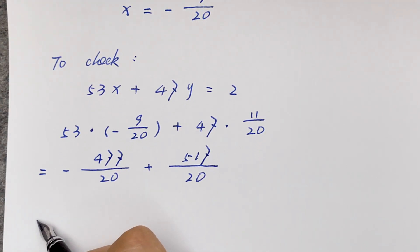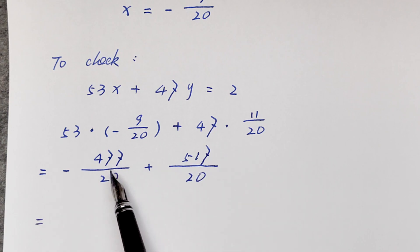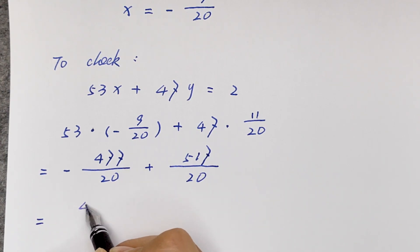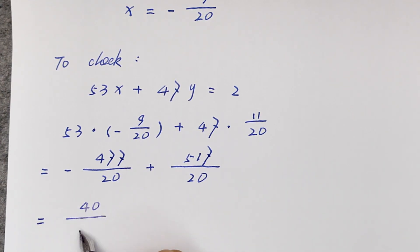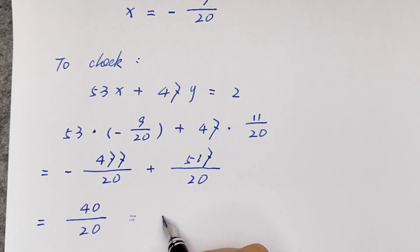It will be equal to 517 minus 477 equals 40 over 20. We simplify, and it is equal to 2. Confirmed.